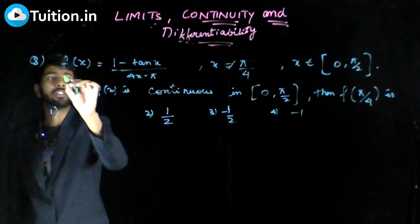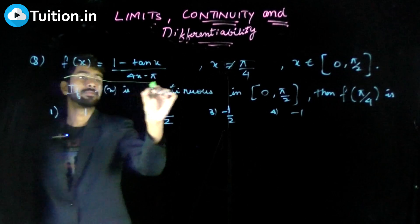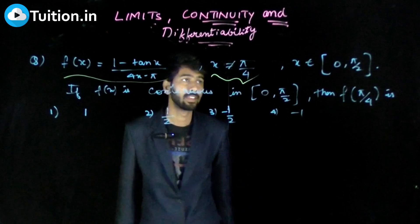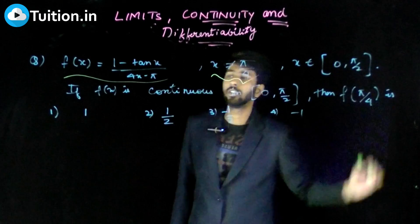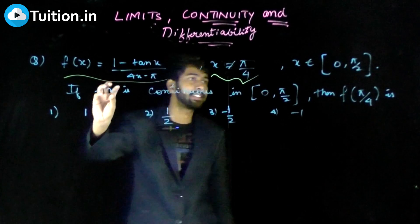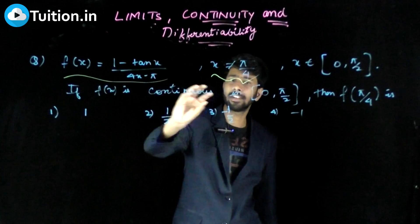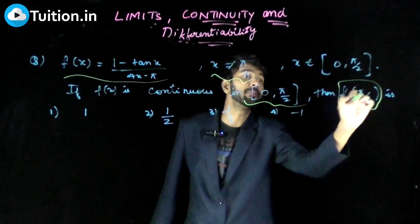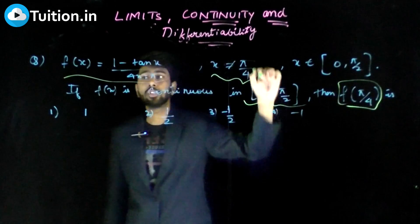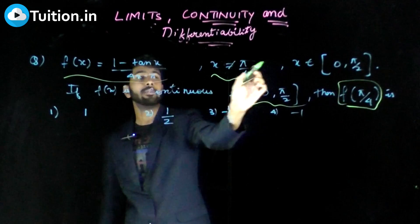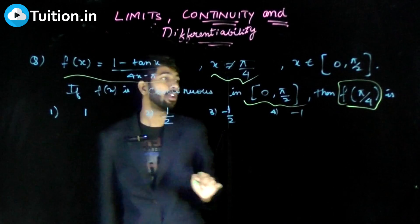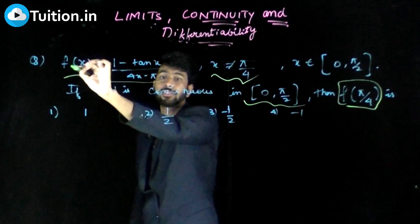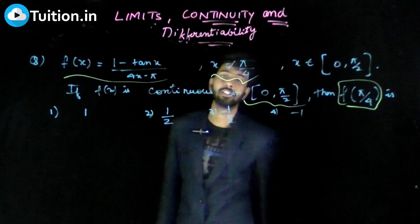Here, f(x) is given and it's stated that x is not equal to π/4, and x is somewhere between 0 and π/2. If f(x) is continuous in this interval, then what is f(π/4)? That means I have to explicitly define f(π/4) so that this function becomes continuous in this interval.